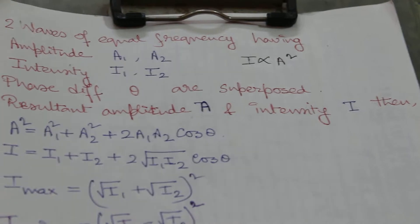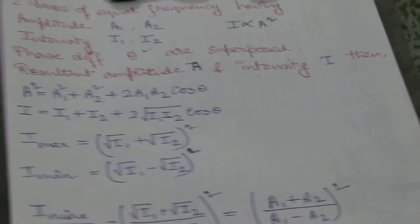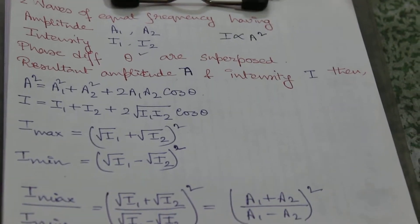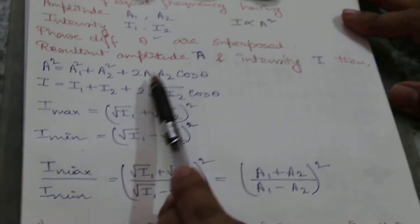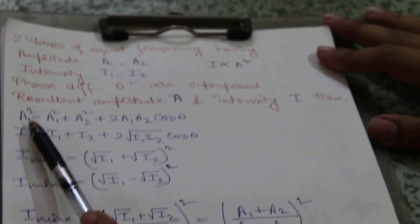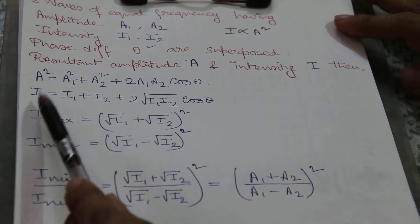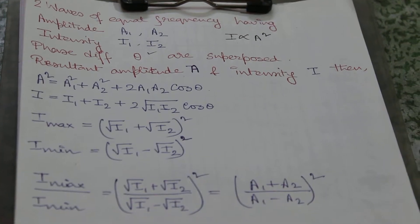The phase difference between the two waves is theta. The resultant amplitude is A and resultant intensity is I. The formula is: A squared equals a1 squared plus a2 squared plus 2·a1·a2·cos(theta). The resultant intensity I equals i1 plus i2 plus 2·√(i1·i2)·cos(theta).